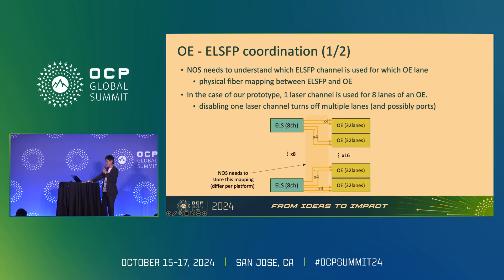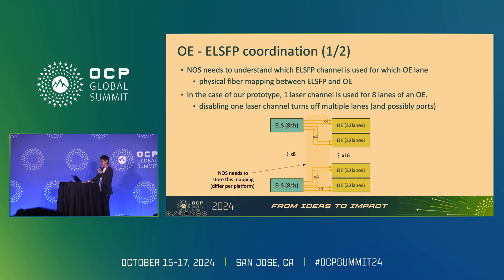The next issue is coordination between the optical engine (OE) and ELSFP. The ELSFP and OE are connected internally via optical fibers, and to activate a specific OE you need to ensure the connected ELSFP is powered on. Therefore, the NOS must know which channels of the ELSFP are connected to which lanes of the OE, and since this connection map varies by platform, the NOS needs to handle this information. In our prototype, one laser channel is shared among eight lanes of the optical engine, meaning turning off one laser channel could disable multiple ports. For example, if DR4 is used for all ports and each port uses four lanes, setting admin down on one port — if the NOS simply turns off the laser channel connected to that port — could bring down other ports as well. So ELSFP control must take port configuration into account.